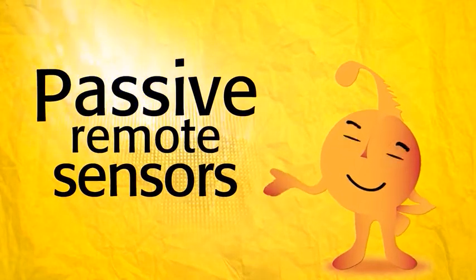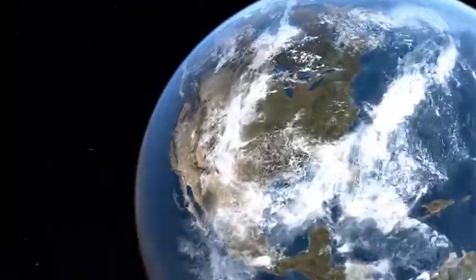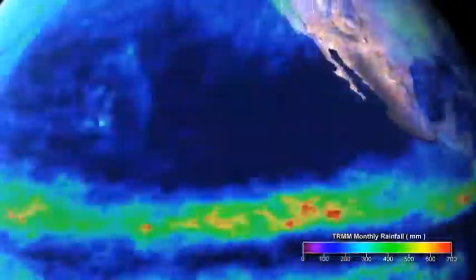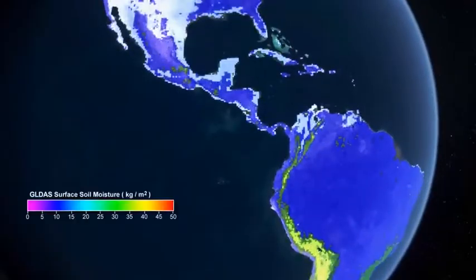Passive remote sensors measure surface and atmospheric temperature, rainfall intensity, wind and cloud coverage maps, and moisture and salinity maps.